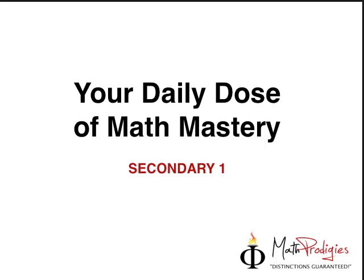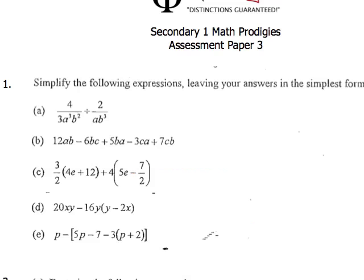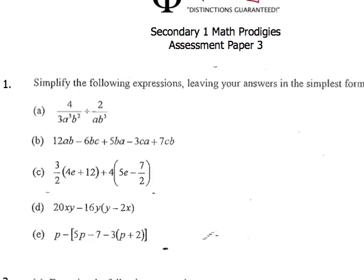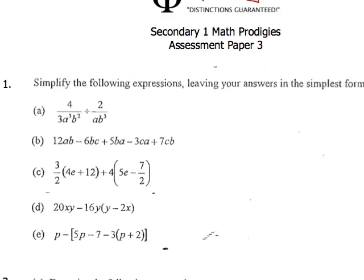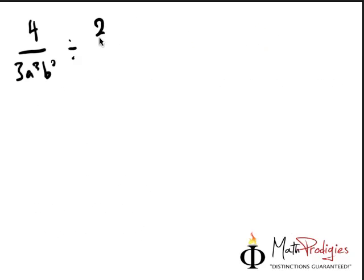Okay, so let's take a look at the very first question over here. There are a few parts to it. There are actually five parts. So the first question is 4 over 3a cubed b squared. Okay, let me just write this down first.